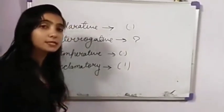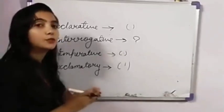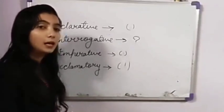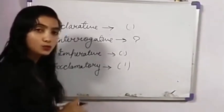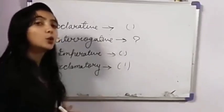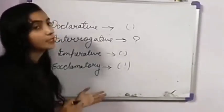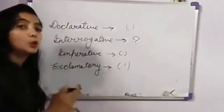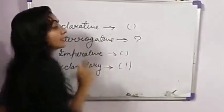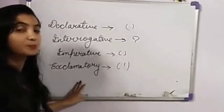Now we will talk about exclamatory sentences. If we see any type of exclamation mark, then we can easily identify that this is an exclamatory sentence. Exclamatory sentences usually start with exclamation words like alas, hooray, oh no, ouch. Or yeh shuru hota hai 'what a pleasant surprise.' What se shuru hota hai ya how se shuru hota hai. Agar last mein question mark nahi mili, toh aap samajh sakte hain yeh exclamatory sentence hai.